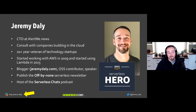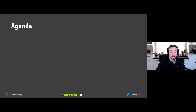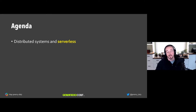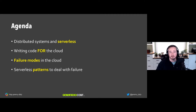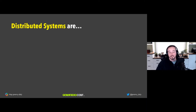I have a QA-Jeremy-Daly Slack group — if you want to ask me questions, go there. I'll spend some time after the talk there. Today's agenda is busy. We'll talk about distributed systems and serverless, writing code for the cloud versus traditional applications, failure modes in the cloud, and finally a couple of serverless patterns to deal with failure in the cloud.